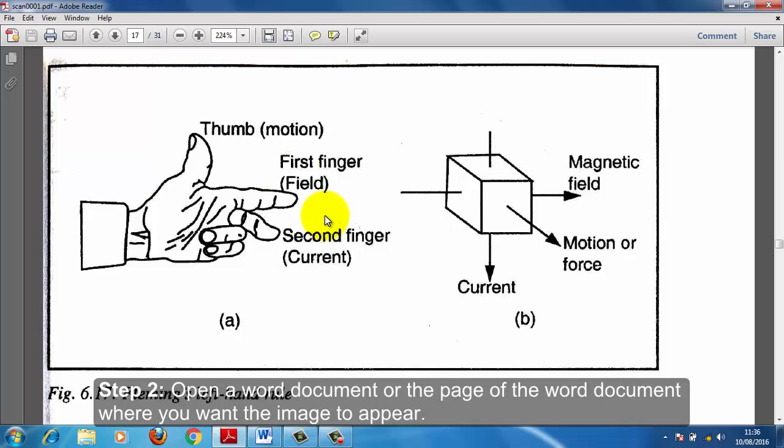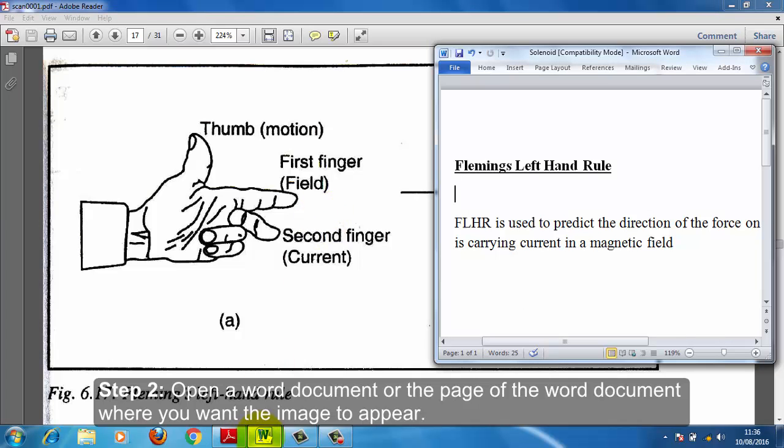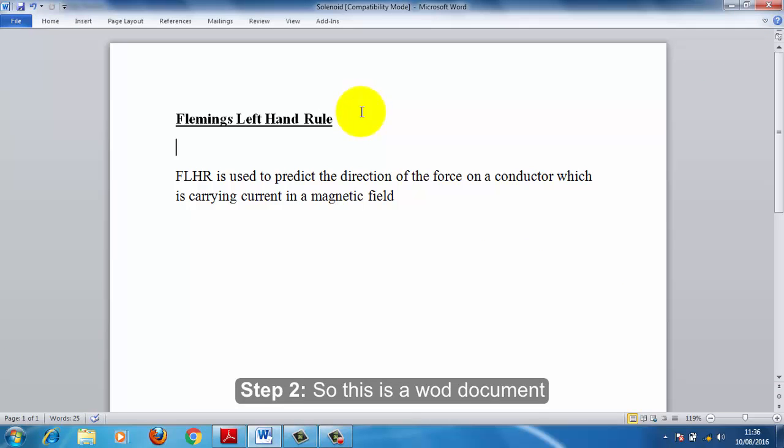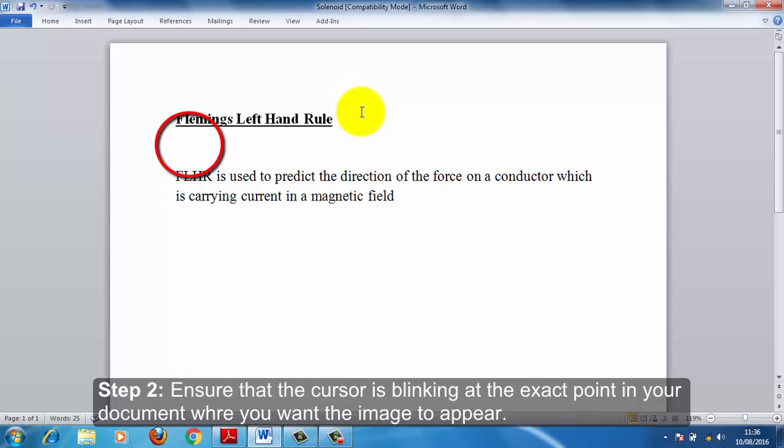Step number two. Open a Word document or the page of the Word document where you want the image to appear. So this is a Word document. Ensure that the cursor is blinking at the exact point in your document where you want the image to appear. I want the image to appear at this point in this space here. So I put my cursor at this point.